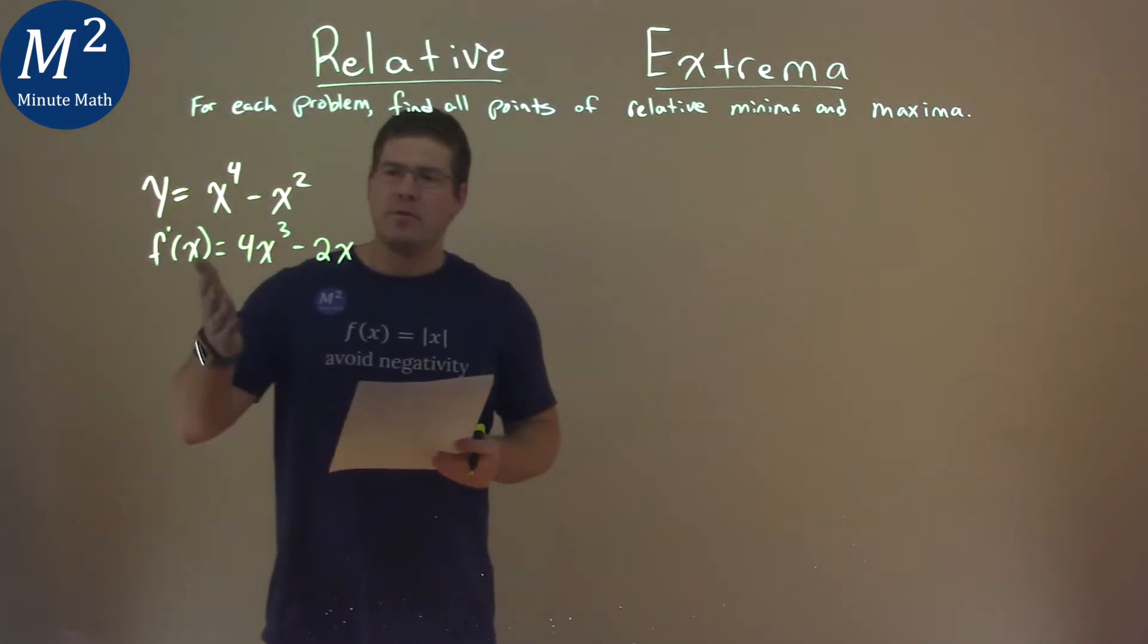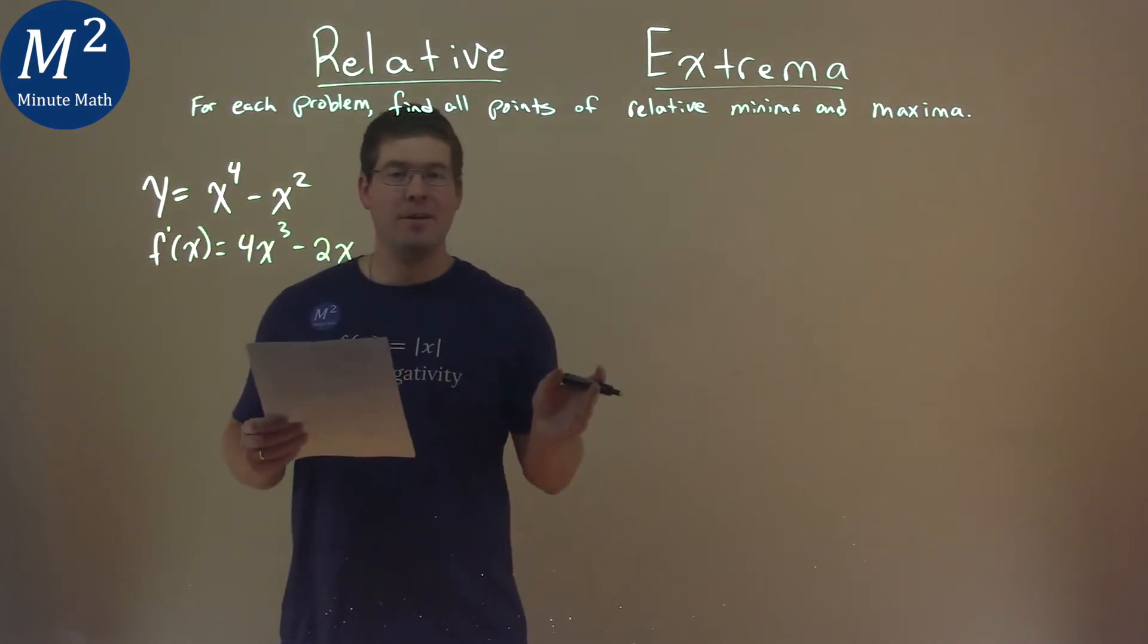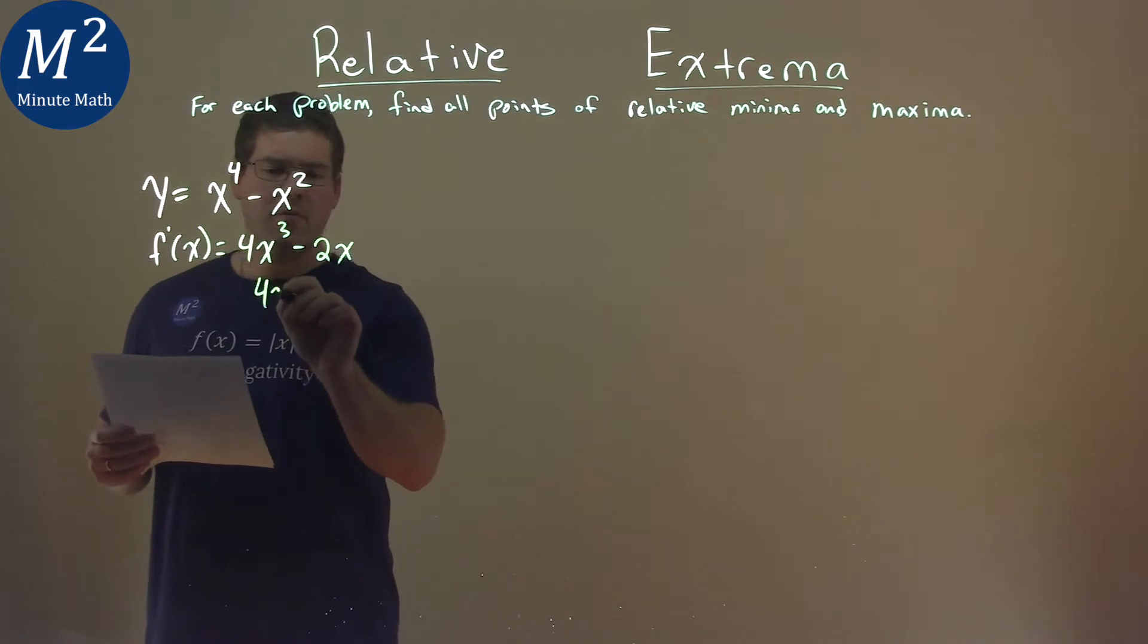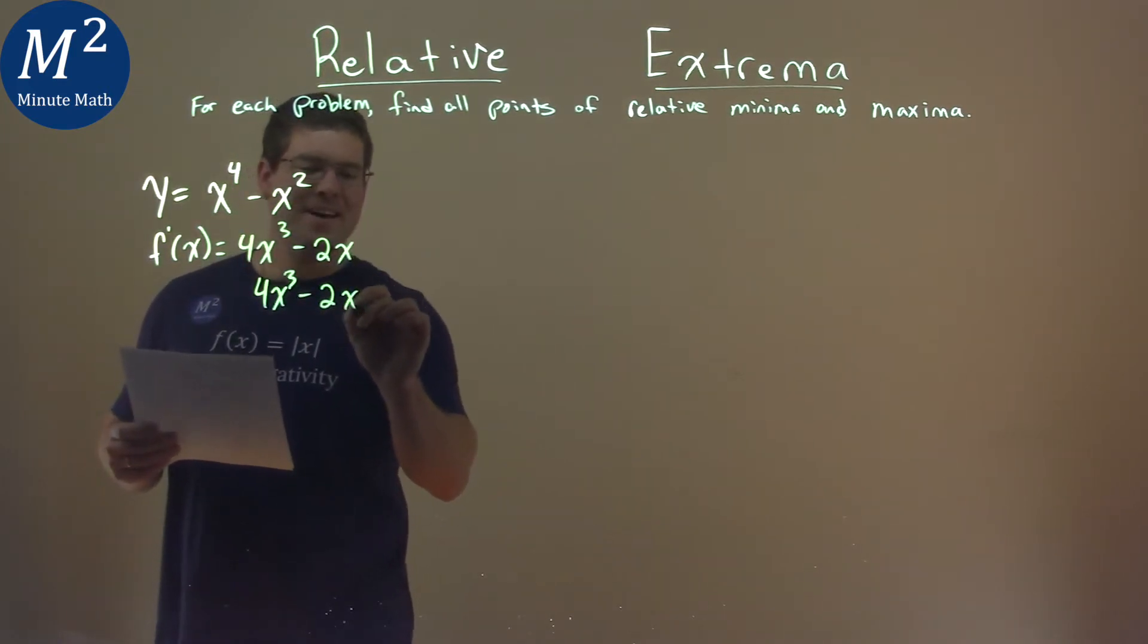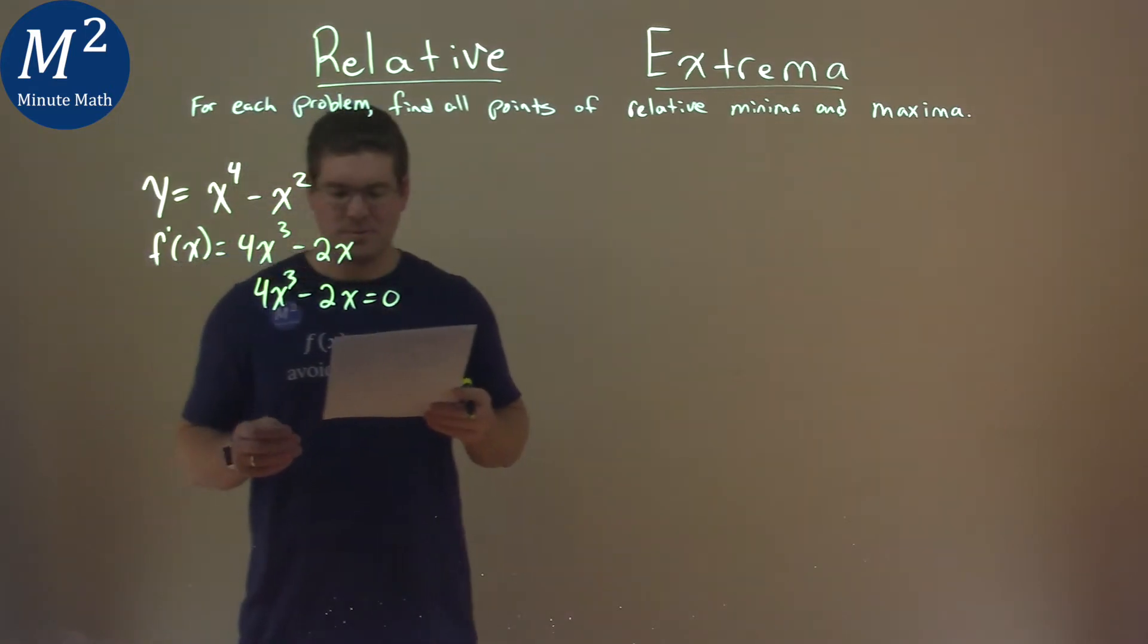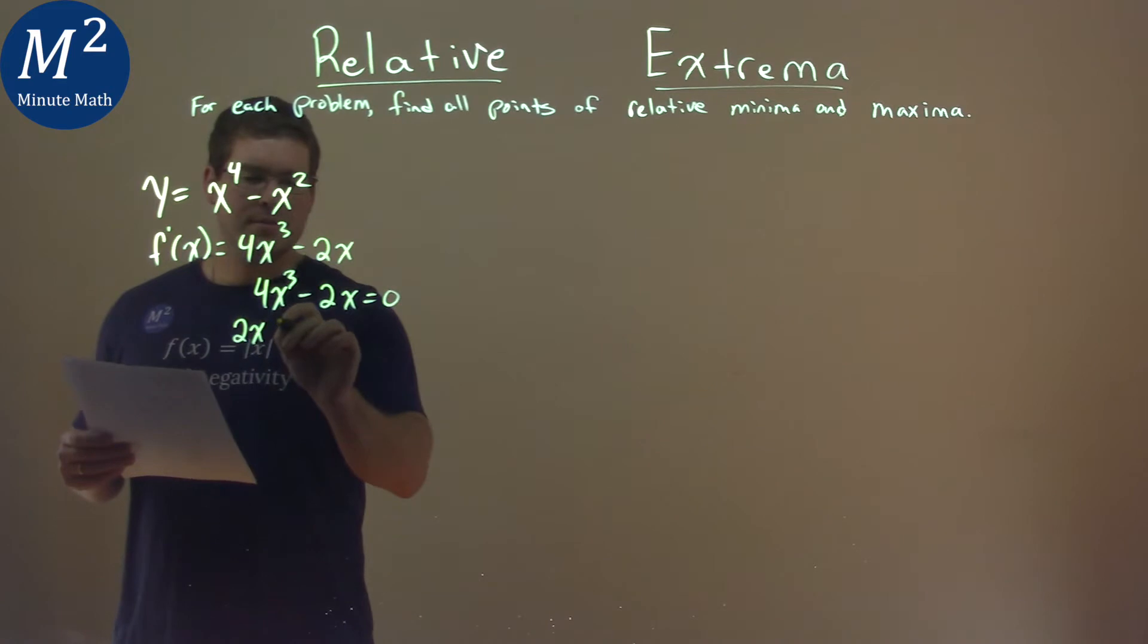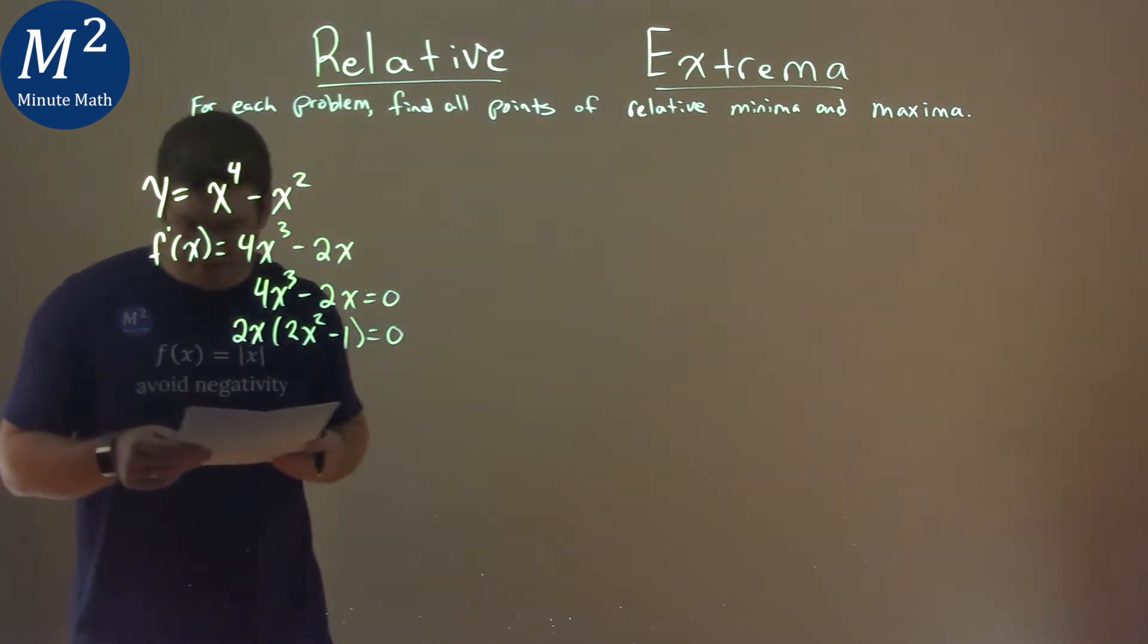So we have our first derivative right there, and to do the first derivative test, we need to find the critical points, so we need to set this equal to zero. So 4x to the third minus 2x. We set that equal to zero, and we need to solve. Well, if I pull out a 2x here, I have 2x times 2x squared minus 1 equals zero.